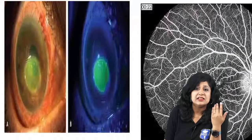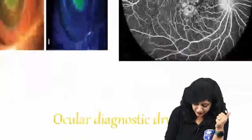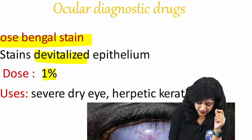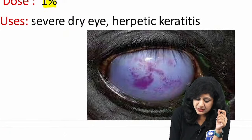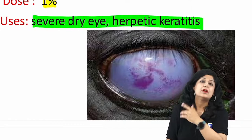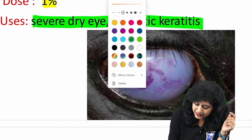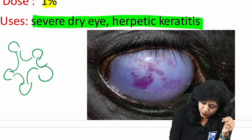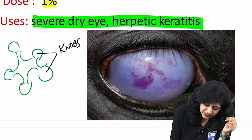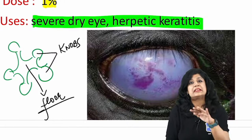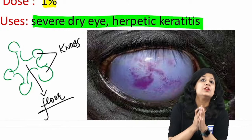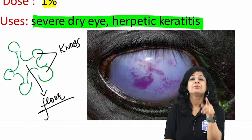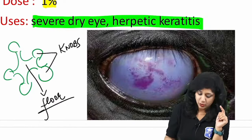Rose bengal stain (1%) stains devitalized epithelium. It is used in severe dry eye and herpetic keratitis. In the dendritic ulcer pattern — the classic tree-like arborizing pattern with terminal knobs — both stains are used: rose bengal stains the terminal knobs, while fluorescein stains the floor. A simple mnemonic: F for floor, F for fluorescein; knobs are stained by rose bengal.